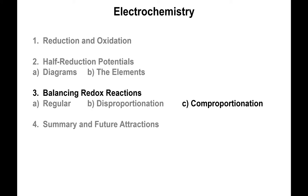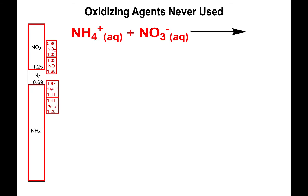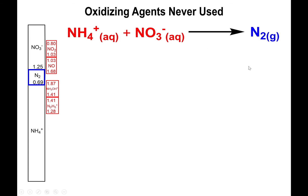This is the last portion called comproportionation reactions. They're similar to disproportionation except that typically you have two different species of the same element — one that is reduced and one that is oxidized. Because they're in contact with each other and don't overlap in the diagram, they have the potential for reacting. The reaction produces the same overall product, in this case N2 — that's what you form when ammonium and nitrate react with each other.